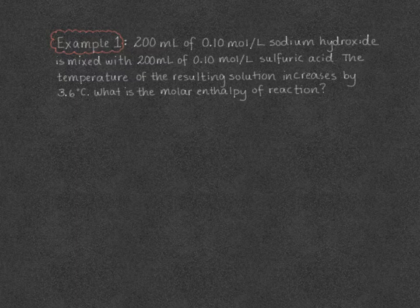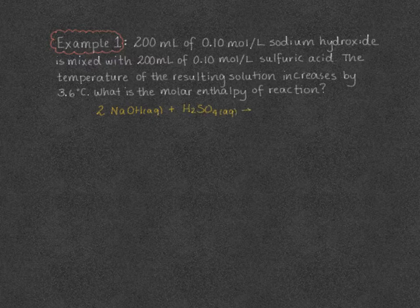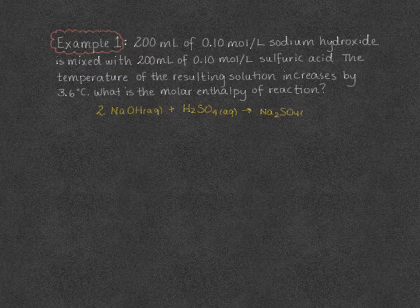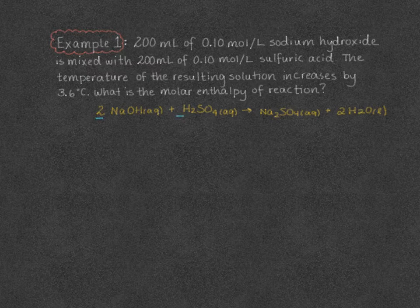Anytime we have a reaction we need to write the balanced chemical reaction. We have two moles of sodium hydroxide for every one mole of sulfuric acid, because sulfuric acid is a diprotic acid. This produces sodium sulfate and two moles of water. So we have a two-to-one mole ratio for sodium hydroxide and sulfuric acid.